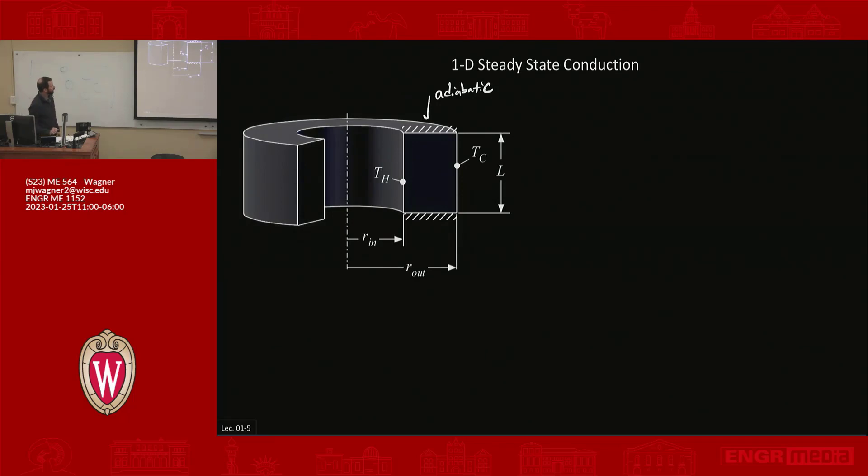So when we say that there's 1D conduction, that means that the only temperature gradient that exists is in one dimension. In this case there's insulation, so there's going to only be a temperature gradient in the radial direction. So we would write T as a function of potentially the radius, maybe the cylindrical coordinates theta and Z. Here we've decided because it's 1D, we really only want to pick one of them. So maybe those two would go away.